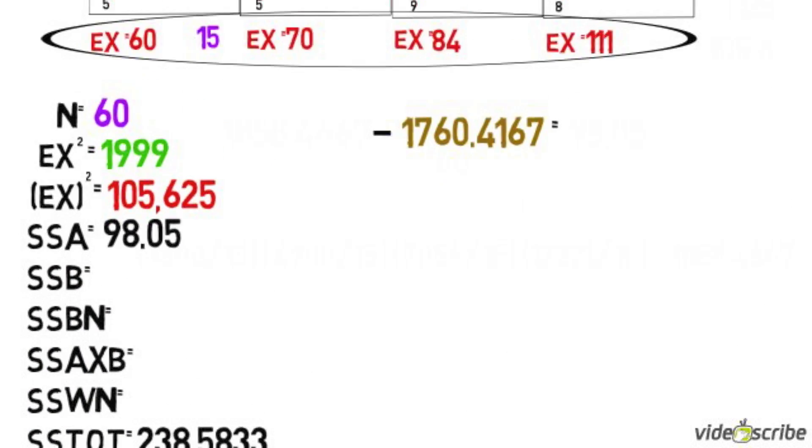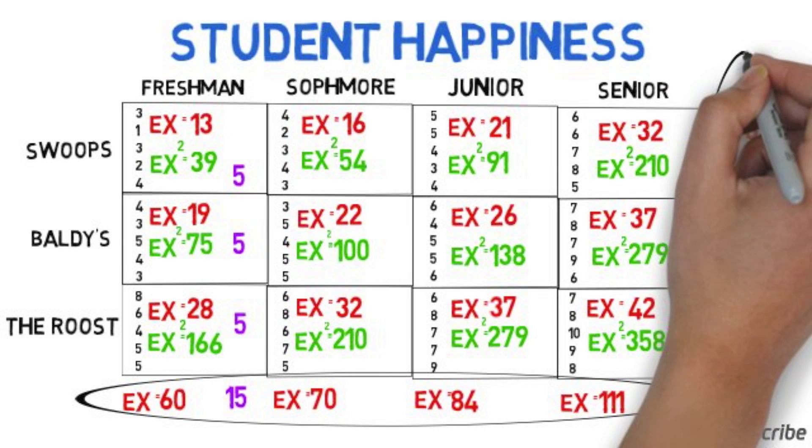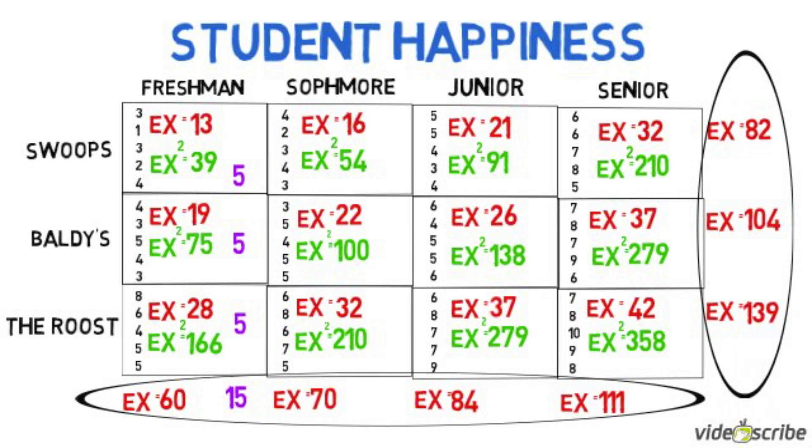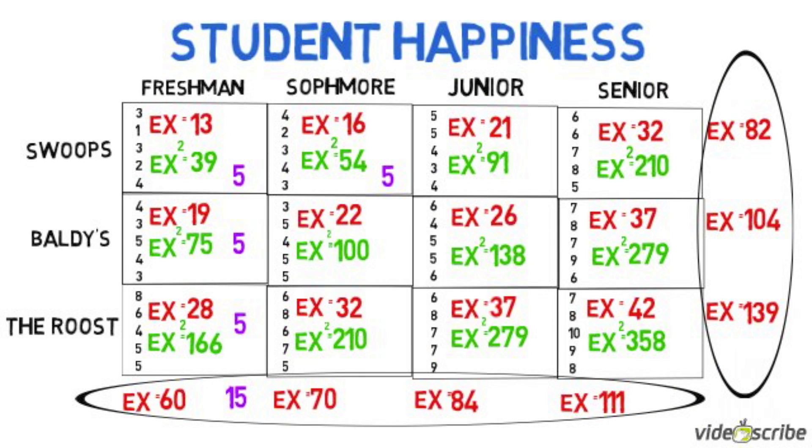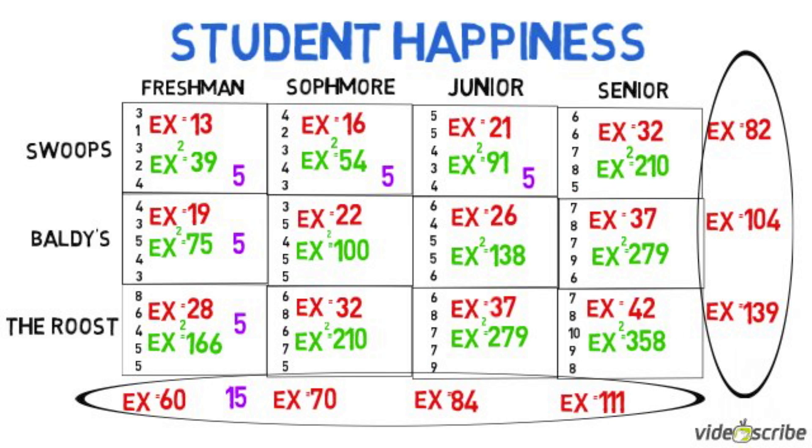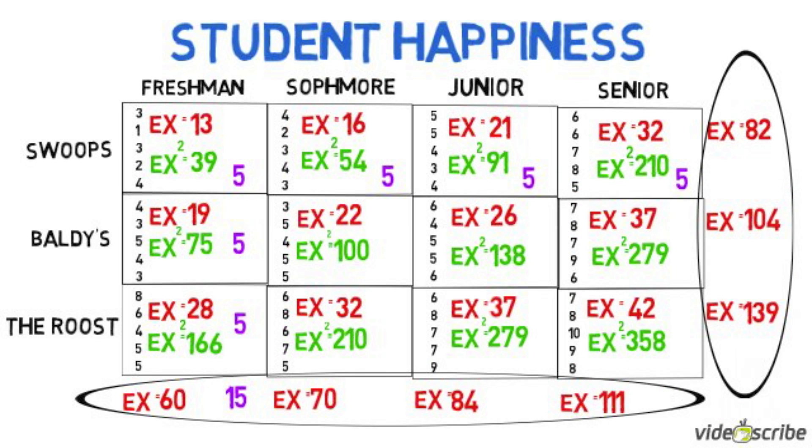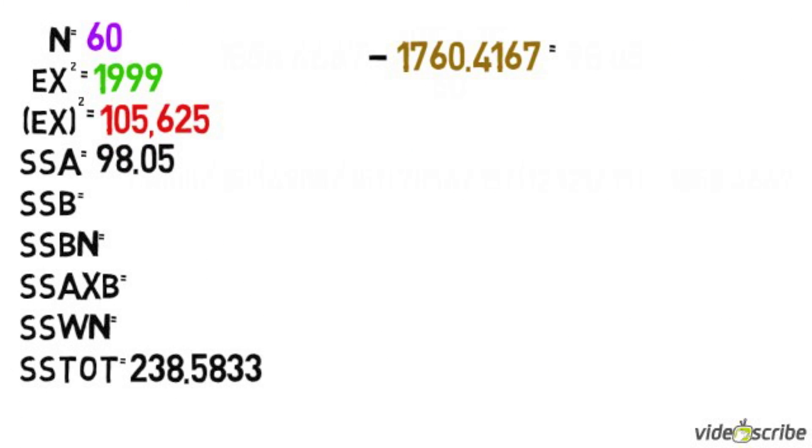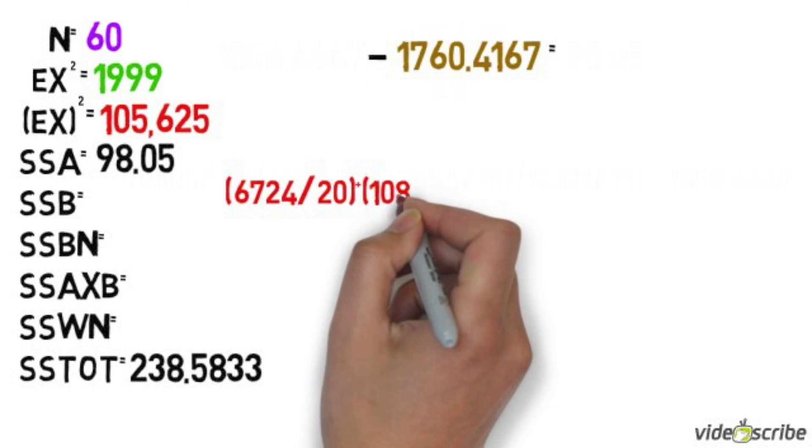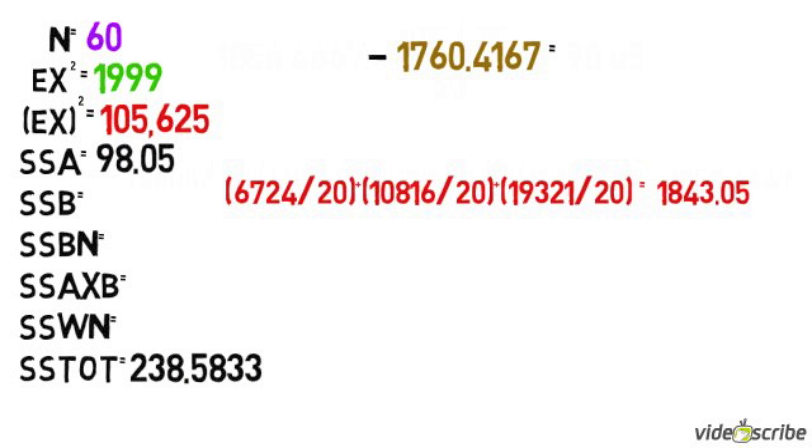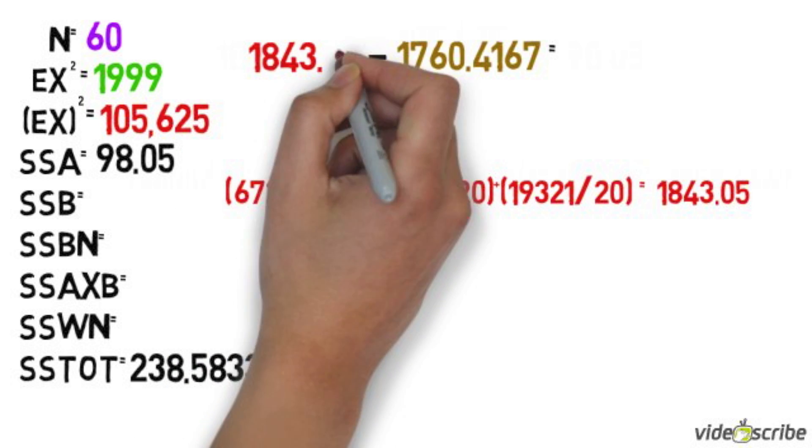To find sum of squares for factor B, we're going to use each row. We're going to find the number of participants in each row, which happens to be 20, square each sum of x for each row, and then divide it by 20. Add them all together, and then subtract it from our squared sum of x divided by n.